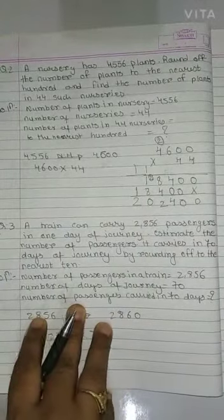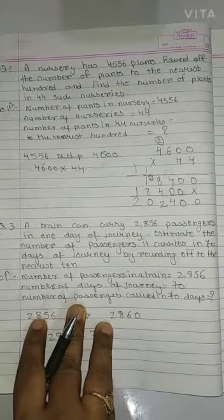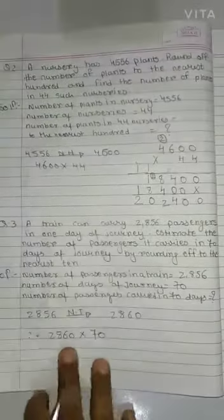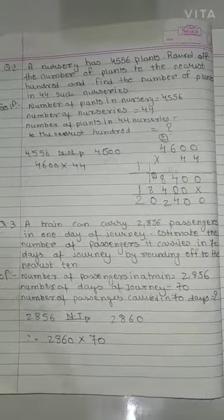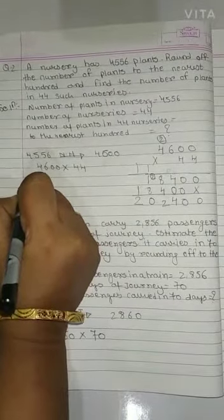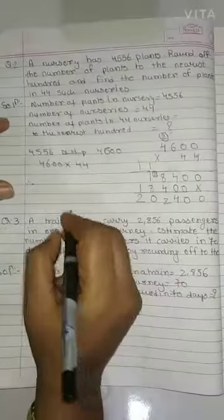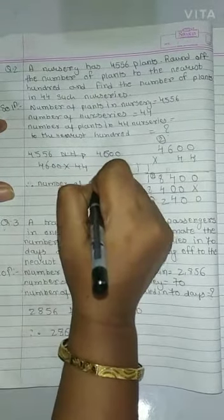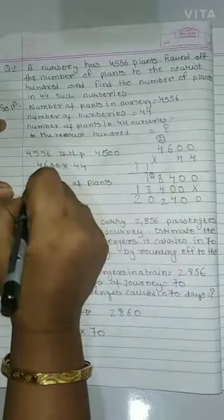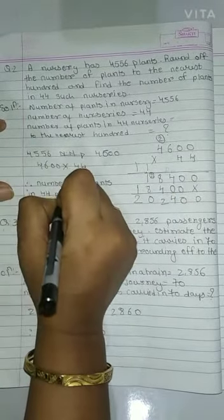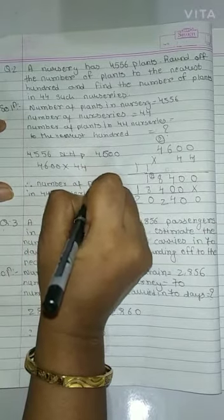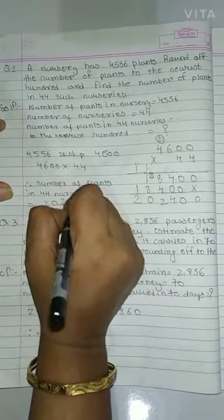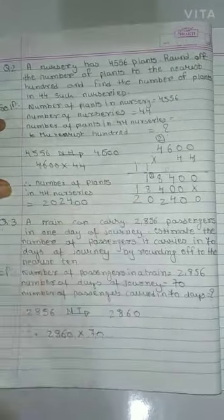So what we get as an answer? 202,400. So therefore, number of plants in 44 nursery is equals to 202,400. Understood?